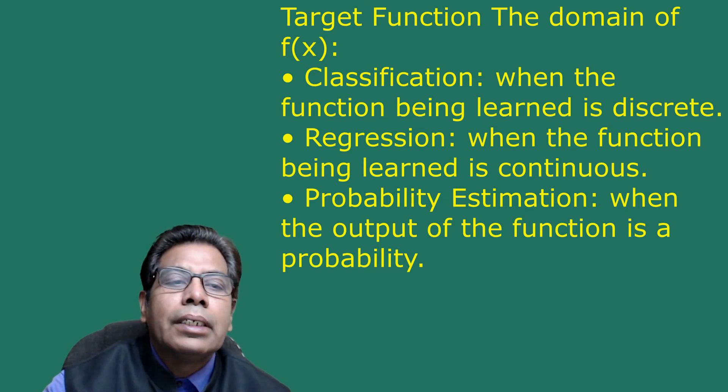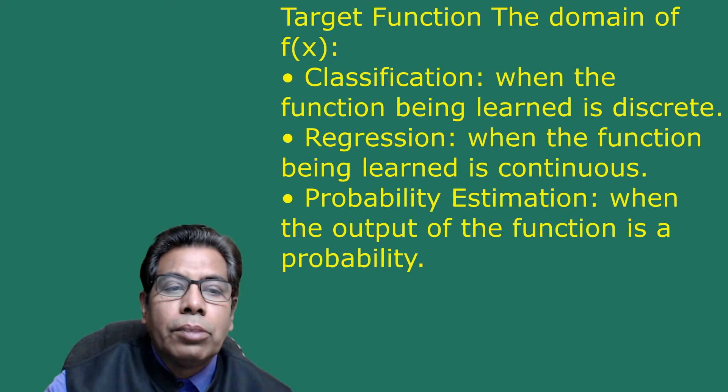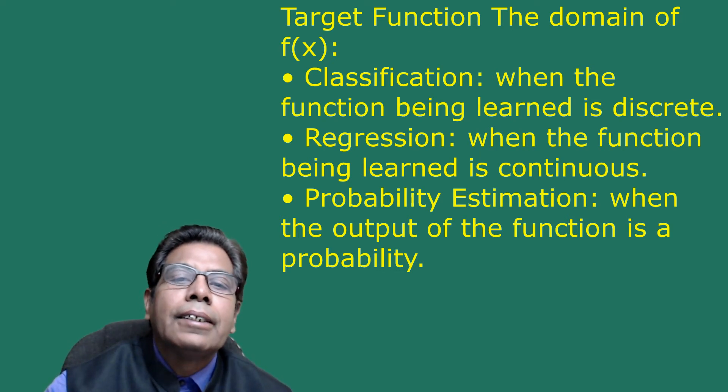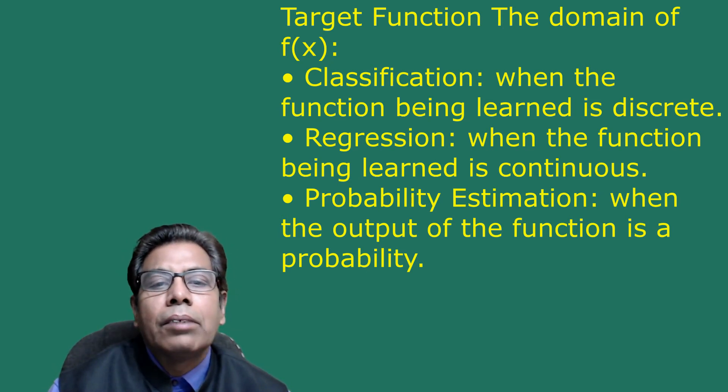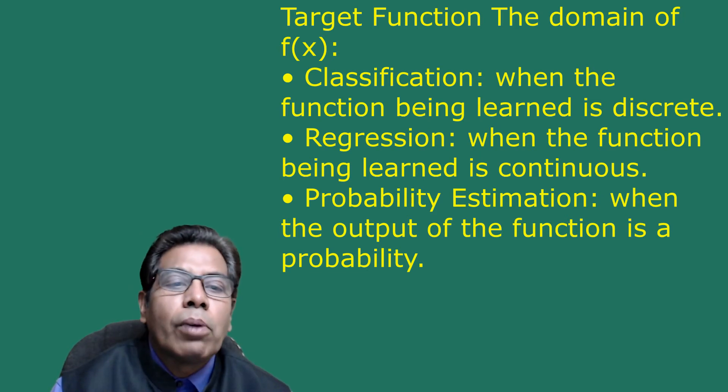The target function f(x) can fall into different domains: classification, regression, and probability estimation. In classification, when the function being learned is discrete, we call it classification. When the function being learned is continuous, we call it regression. When the output of the function is a probability, we call it probability estimation. For example, in binary classification f(x) ∈ {-1, 1}; in multi-class classification f(x) ∈ {1, 2, ..., K}; and in regression f(x) ∈ ℝ.